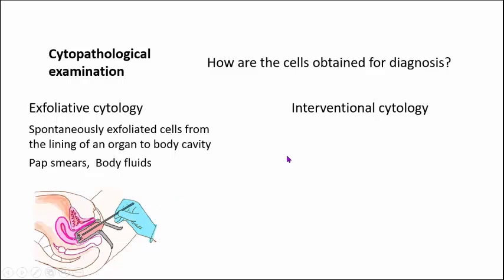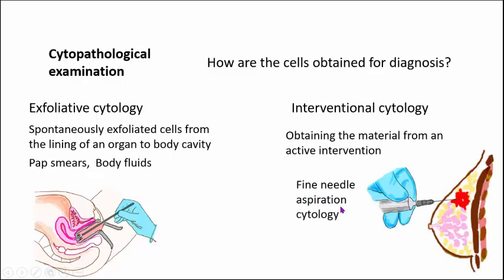Interventional cytology means you obtain the material through active intervention. One example is fine needle aspiration cytology. Imagine a patient comes with a lump in the breast and you suspect malignancy. The pathologist uses a fine needle to aspirate material from the lesion and studies the cells on a glass slide. That is how you make a diagnosis of cancer using fine needle aspiration cytology.